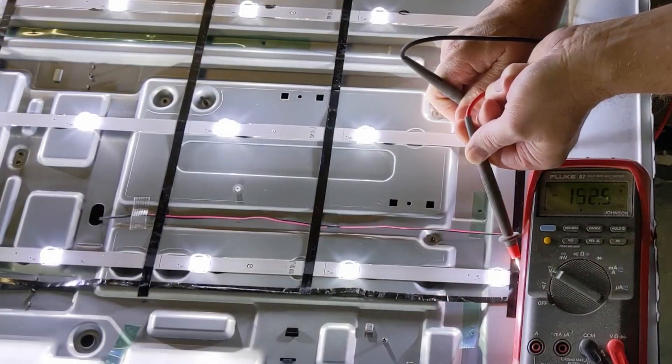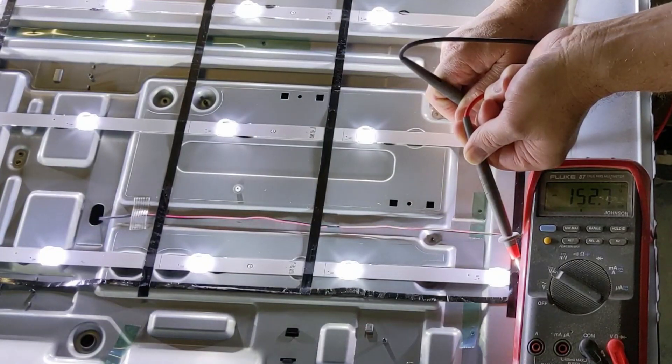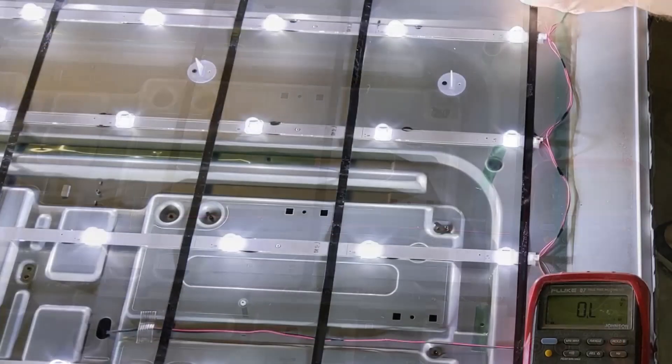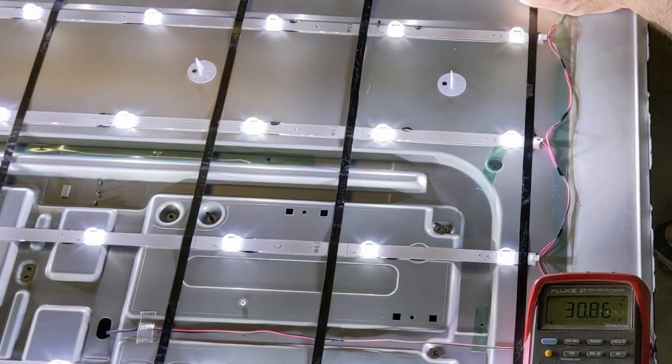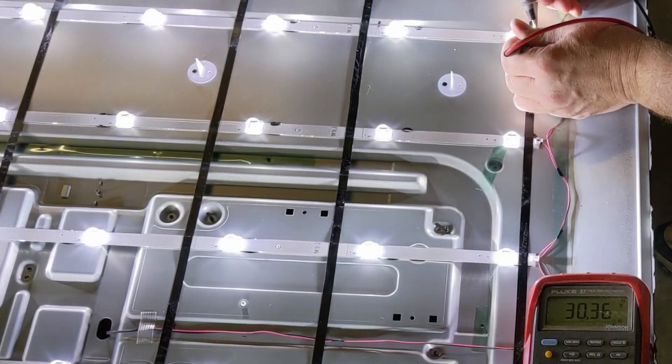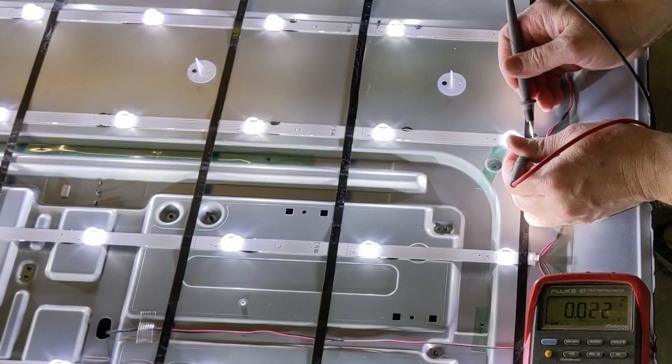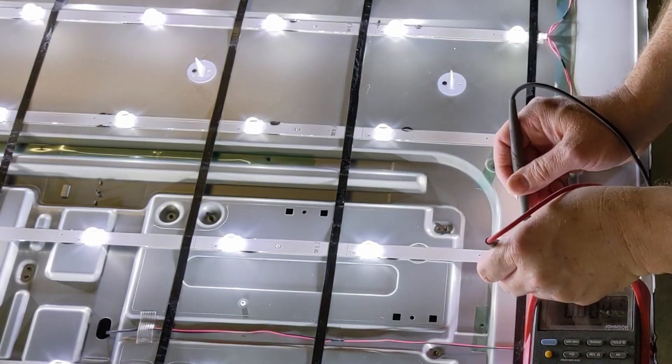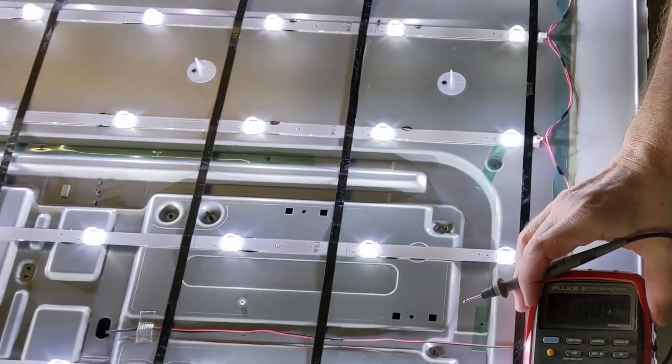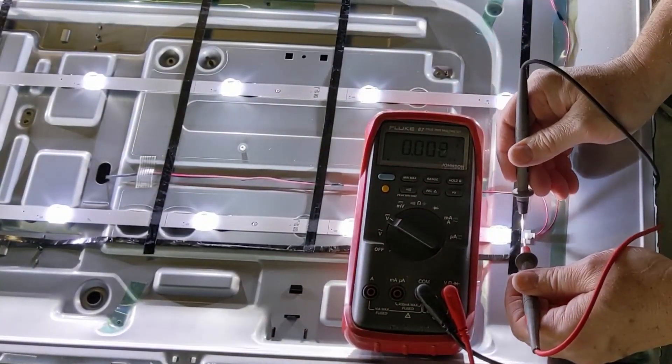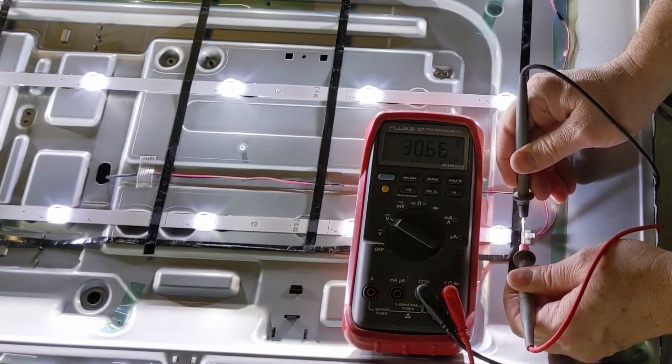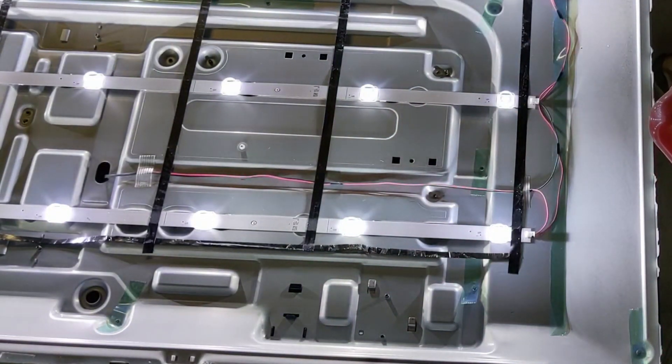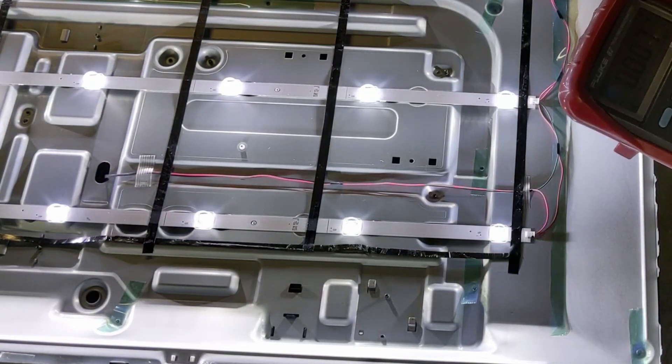Our voltage is now about 152.7 and rock solid. And across each individual LED strip, we have 30.86, 30.36, 30.42, 30.34, and 30.66. So a very well balanced voltage across all five. So the current's regulated very well.